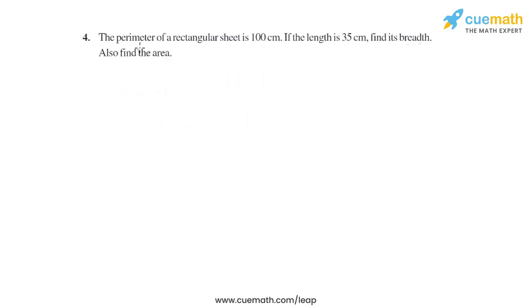Question 4 of this exercise says the perimeter of a rectangular sheet is 100 cm. If the length is 35 cm, find its breadth. Also find the area. So in this question, the perimeter of a rectangular sheet is given, that is 100 cm. Length is given, that is 35 cm. We have to find its breadth.